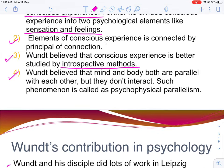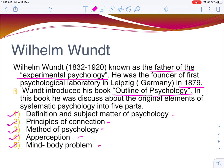This is all about Wundt's contributions. In his Outline of Psychology, he divided systematic psychology into five parts. He established experimental psychology at Leipzig University in Germany in 1879, and was the first to give psychology an independent status. Please read about Wundt in detail for a clearer understanding of all his concepts.